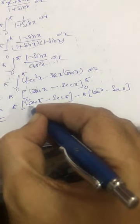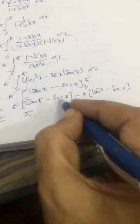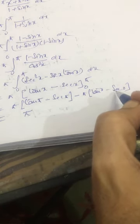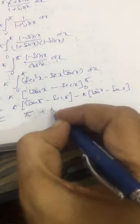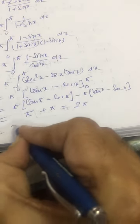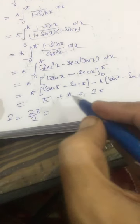tan pi is 0 and sec pi is minus 1. So this is pi times (0 plus 1 minus 0 plus 1), which is 2 pi. Therefore, i equals 2 pi divided by 2 equal to pi.